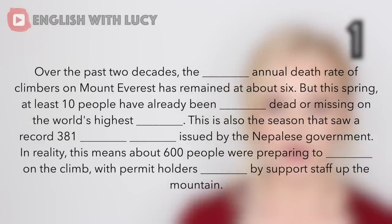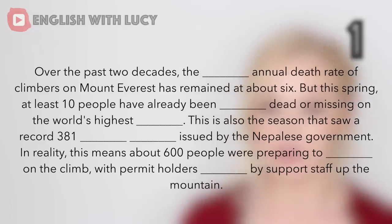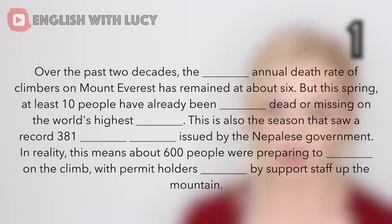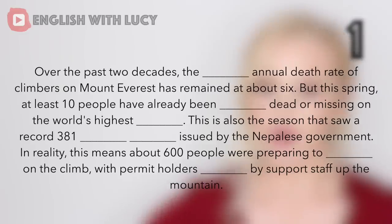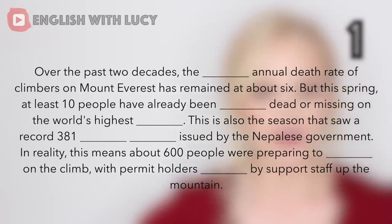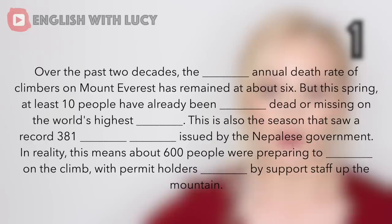Over the past two decades, the average annual death rate of climbers on Mount Everest has remained at about six. But this spring, at least 10 people have already been reported dead or missing on the world's highest peak. This is also the season that saw a record 381 climbing permits issued by the Nepalese government. In reality, this means about 600 people were preparing to embark on the climb, with permit holders accompanied by support staff up the mountain.